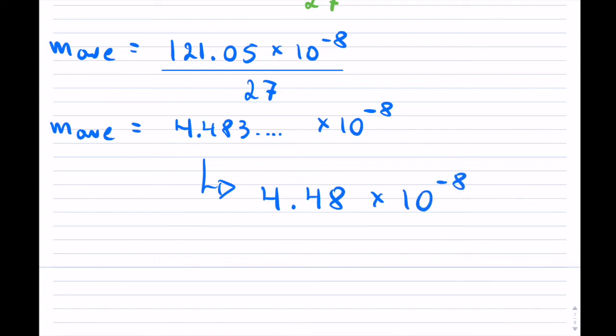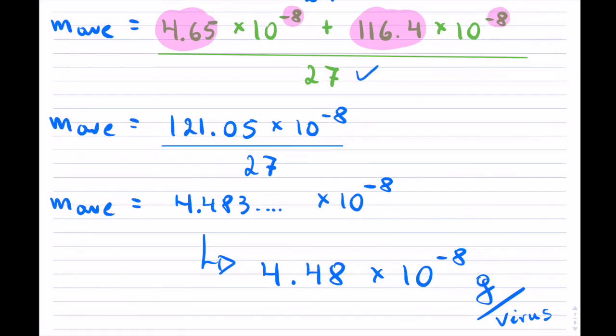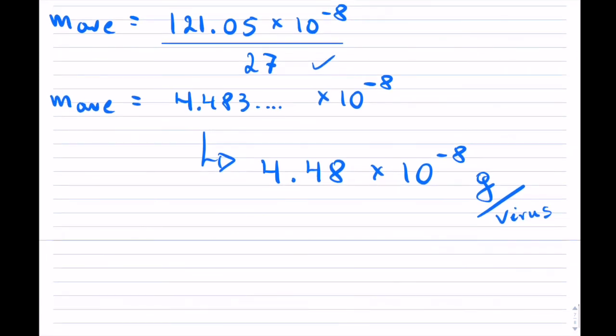And that is grams per one virus strand because we're doing the average, so it's per one. And that completes the question. Thank you for watching.